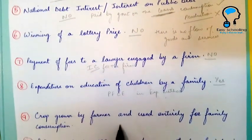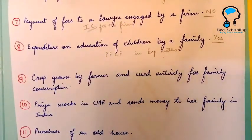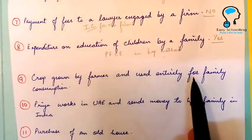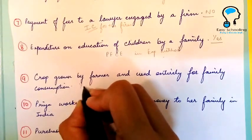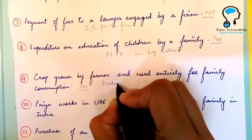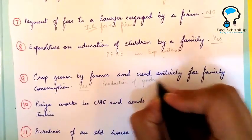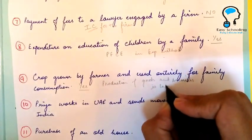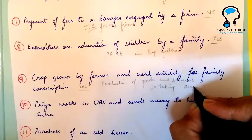Next is crops grown by a farmer and used entirely for family consumption. Yes, this will be included in national income because production of goods and services is taking place — it is adding to the flow of goods and services in the economy.